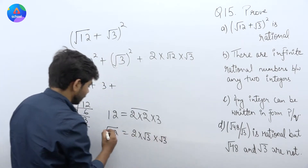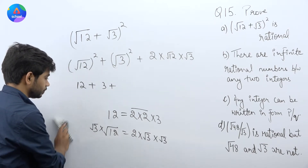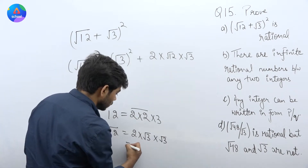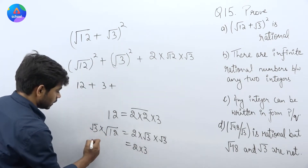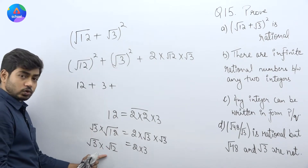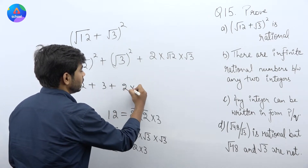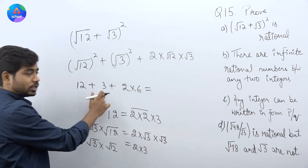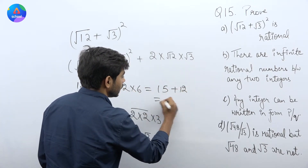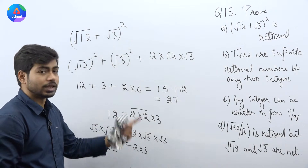अगर मैं √3 का multiply करूं, तो यह value बन जाएगी 2 × √3 × √3 = 2 × 3 = 6. यानि कि √3 × √12 = √36 = 6, और 2 × 6 = 12. तो result बन जाएगा 12 + 3 + 12 = 27. यानि कि (√12 + √3)² is rational.